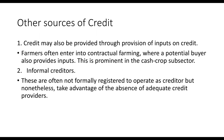Credit may also be provided through the provision of inputs on credit. Farmers often enter into contractual farming where a potential buyer provides the inputs — this is prominently seen in the cash crop subsector. The second other source of credit is informal credit. These creditors are often not formally registered to operate but take advantage of the absence of adequate credit providers, giving out loans in the sector.